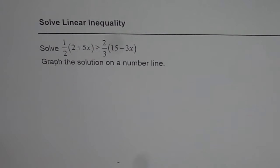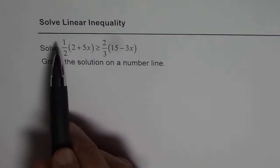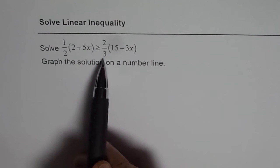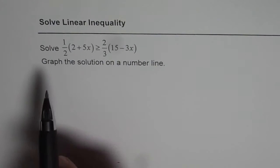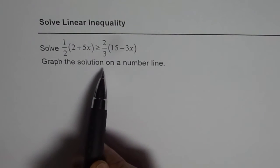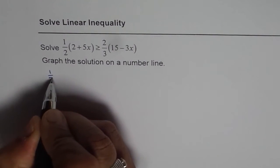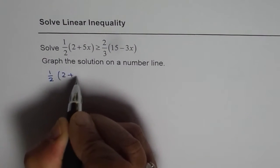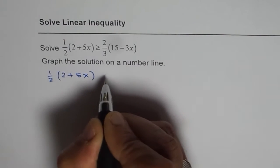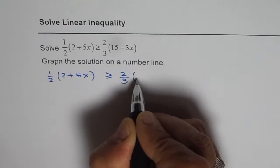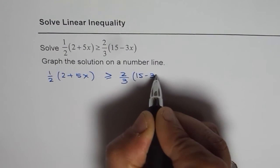I am Anil Kumar sharing with you some test problems on linear inequality. We need to solve half of 2 plus 5x greater than or equal to 2 thirds of 15 minus 3x, and graph the solution on a number line. So let's begin by copying the question: half of 2 plus 5x greater than or equal to 2 thirds of 15 minus 3x.